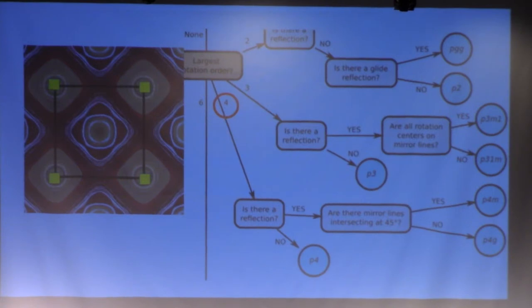Then we're going to determine is there any reflection. As you can see, yes, we can fold it halfway vertically and also horizontally and also diagonally as well. So the next question is are there mirror lines or lines of reflection intersecting at 45 degrees? Yes, if you look at those two adjacent lines you can see that they're intersecting at 45 degrees. So we can determine that was a P4M wallpaper.